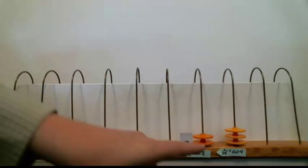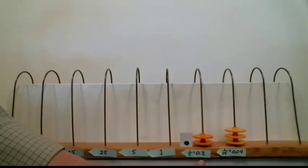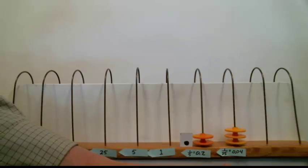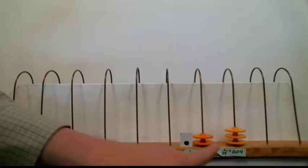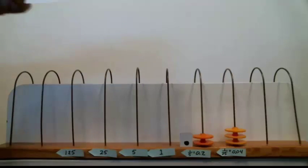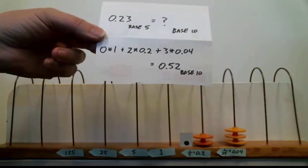What does that mean in base 10? Well, I have 2 beads on the fifths wire. So, that's 2/5. And I have 3 beads on the 1/25ths wire. So, that's 3/25. Add these numbers together. You can use a calculator or whatever. But I want to get this into decimal form. Here is the number that I got.